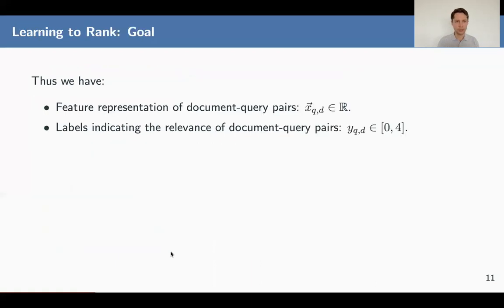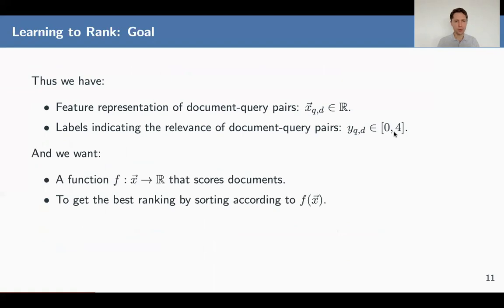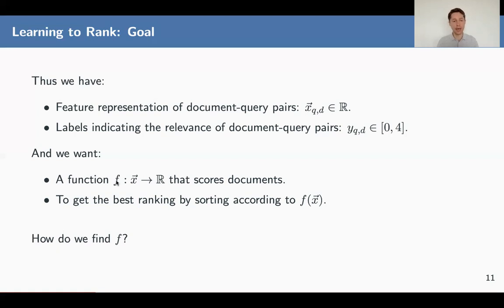Now you have data and features. We've discussed features quite a lot; this is the data. Now we need to actually learn the model that ranks documents. We have features representing each query-document pair, and for each pair we have a label from zero to four. We want a function that maps from a real-valued feature vector to a real-valued score, and we want this model to rank documents best according to certain validation metrics. We will discuss three approaches, and we will start with the pointwise approach.